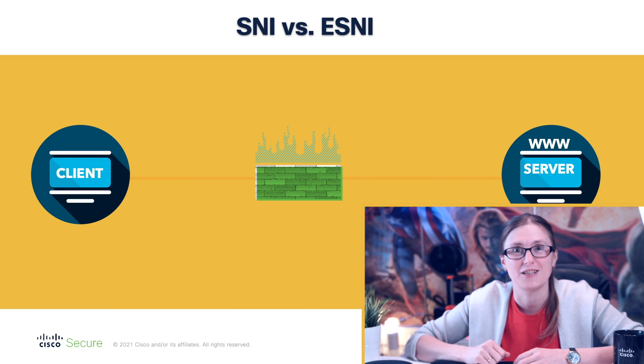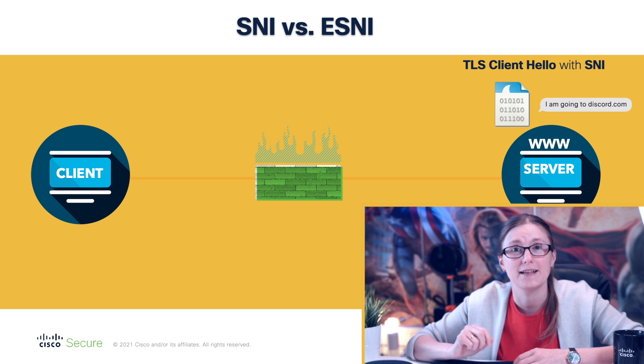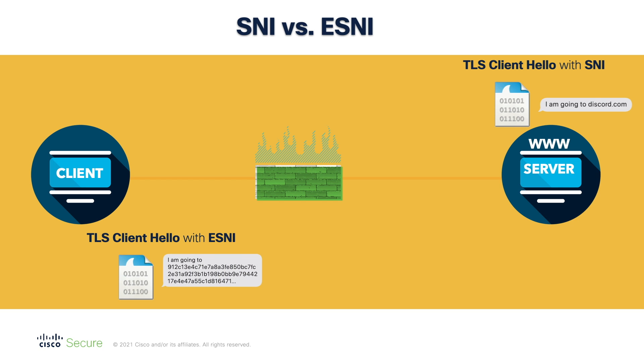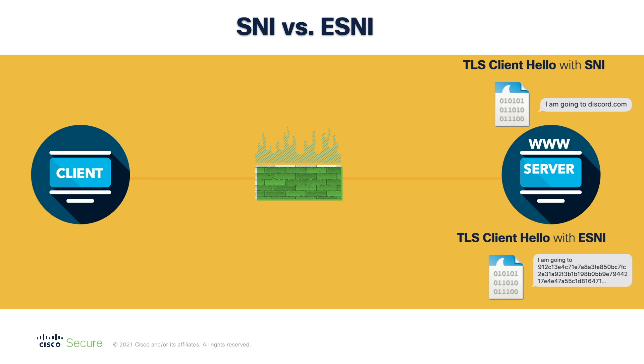However, with the rising number of TLS sessions in the network, malware is also leveraging TLS encryption, and it could use ESNI for malicious activity. With that in mind, we are going to look into a lab demonstration to explore the behavior of traffic flows with SNI versus ESNI flows from the firewall's perspective. We are going to establish a TLS 1.3 flow from the client towards the discord.com server, which supports both SNI and ESNI. So let's jump into the lab demonstration.